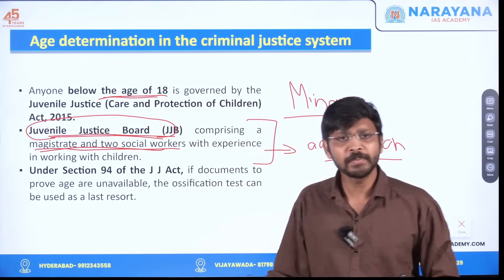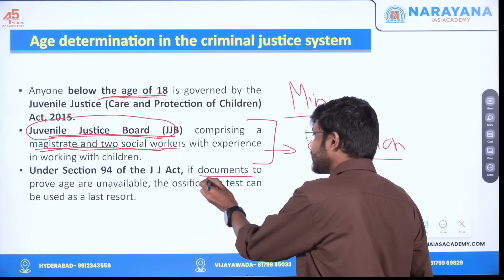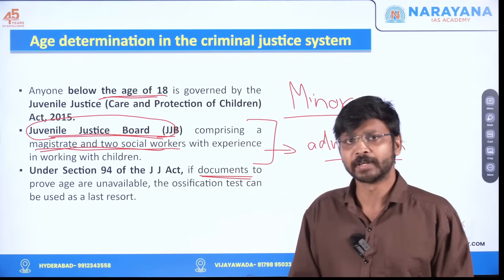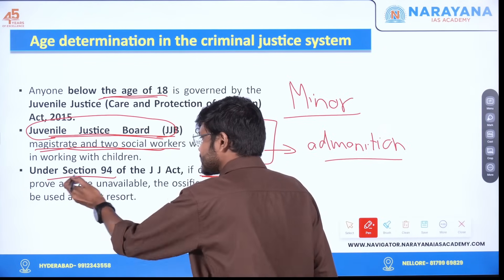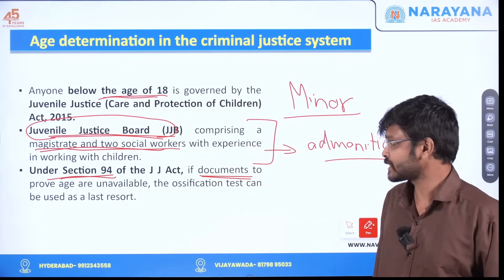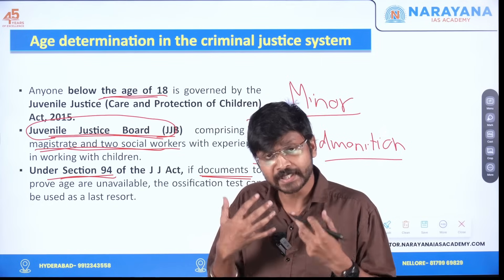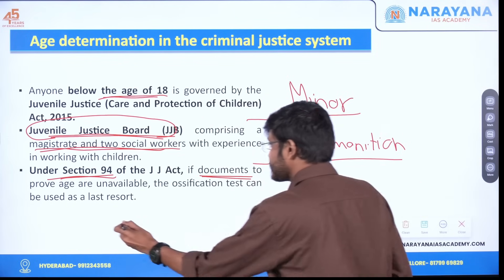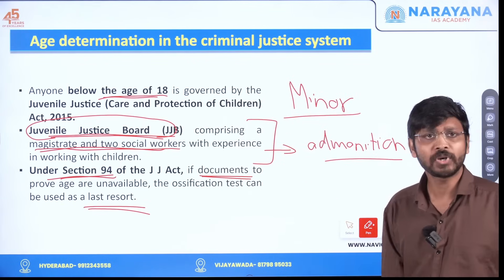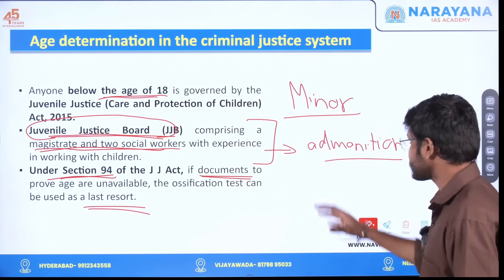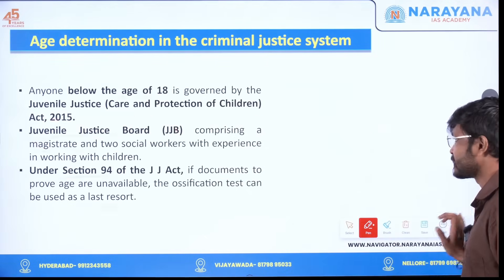Sometimes determining the age of the accused or the victim can be an issue. In ideal cases, documents like birth certificates and school certificates will be available, as mentioned under Section 794 of the Juvenile Justice Act. But sometimes the court may feel these are forged documents, or the documents may not be available. In that case, as a last resort, the court can advise authorities to conduct a bone ossification test to determine the age of the person.